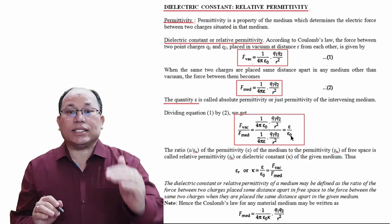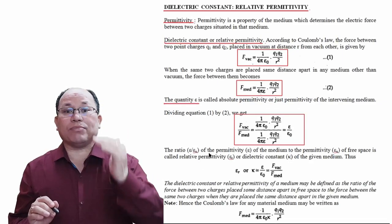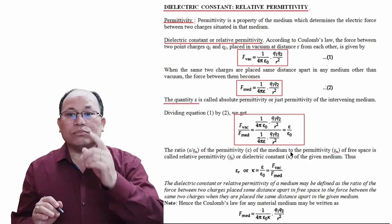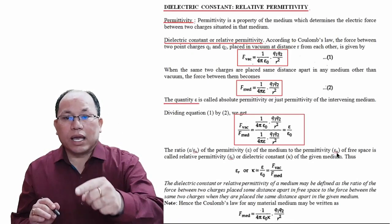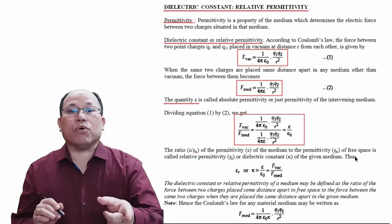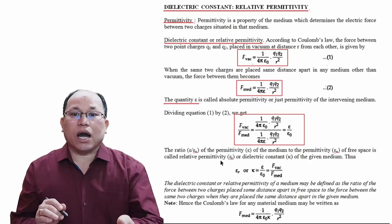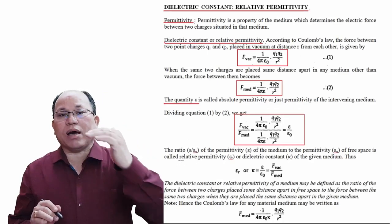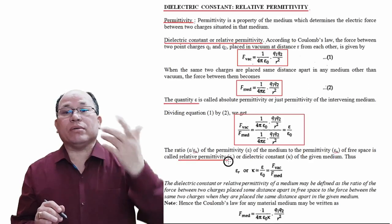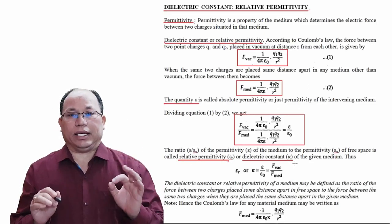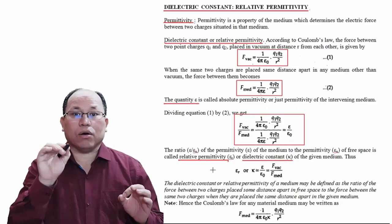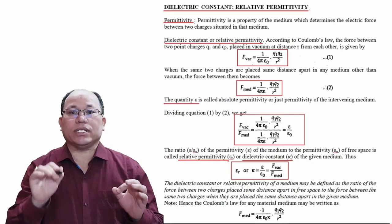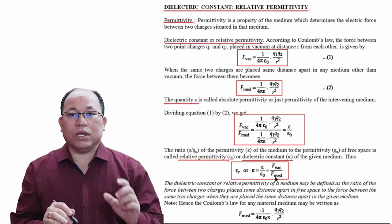So what we are finding is the ratio of the permittivity of the medium ε to the permittivity of free space ε₀. This ratio is called relative permittivity E_R, or dielectric constant of the medium. Thus, E_R or k = ε / ε₀ = F_vacuum / F_medium.